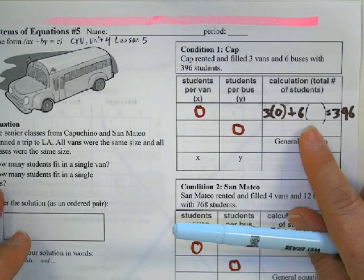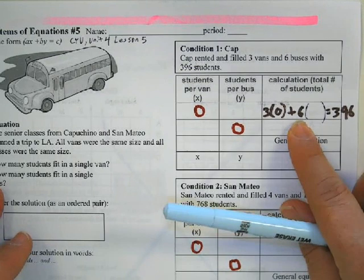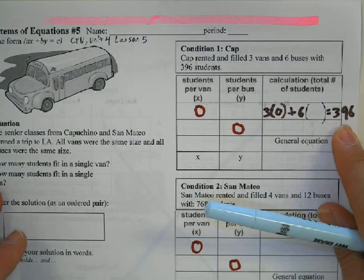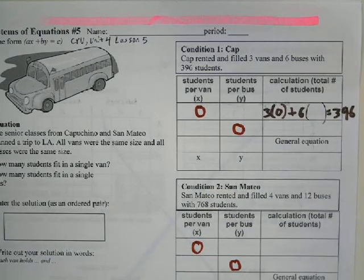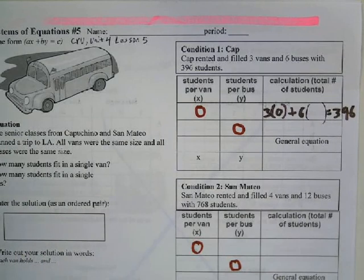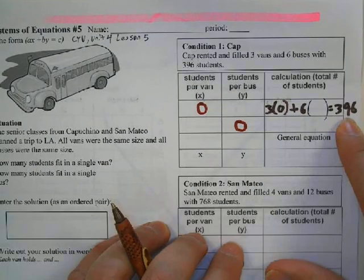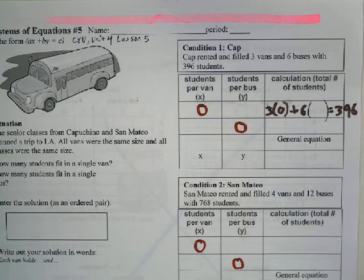If we had 396 students to put onto a bus and none of them were in the van, if I do 396 divided by six, we end up with 66.